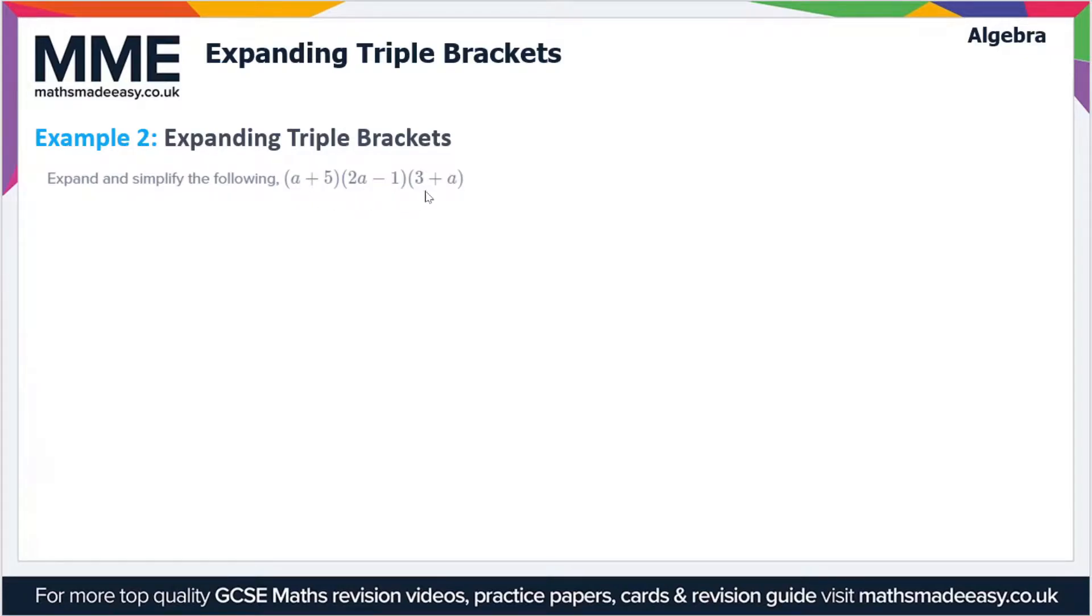(a + 5)(2a - 1)(3 + a). Let's rewrite the expression: (a + 5)(2a - 1)(3 + a). What we're going to do is treat this as a double bracket and a single bracket. Let's ignore the (3 + a) first and just focus on (a + 5)(2a - 1), and then we'll multiply by the (3 + a) afterwards.